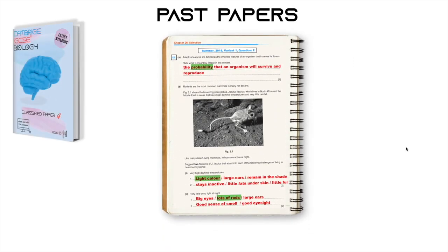Here's a quick look at the past paper book. The questions are classified based on the topic — you have the topic, the year, and the question. You also have the answers, which you can get from the website after you've written your own answers. These answers are written based on the marking schemes in a very easy-to-understand way. I've also highlighted the keywords — the most important things you really need when answering these questions.